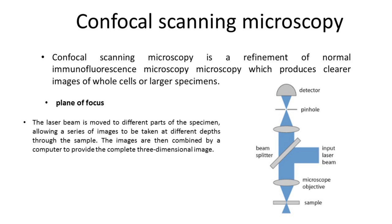With Confocal Scanning Microscopy, only molecules in the plane of focus fluoresce, due to the use of a focused laser beam at the exciting wavelength. The laser beam is moved to different parts of the specimen, allowing a series of images to be taken at different depths through the sample. The images are then combined by a computer to provide a complete three-dimensional image.